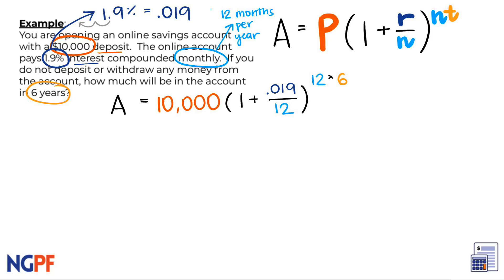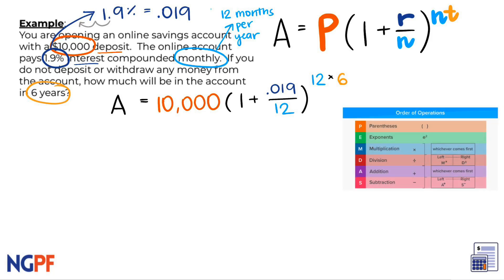Now that we have accurately substituted our variables into the formula, we can use order of operations to solve. First, we can carry out what we have in the parentheses, so we can drop and keep the 10,000. Within the parentheses, we have addition and division. According to order of operations, division takes first priority, so we can divide 0.019 by 12, which gives us 0.00158333. I will wait until the very end to round my solution to the nearest whole dollar.